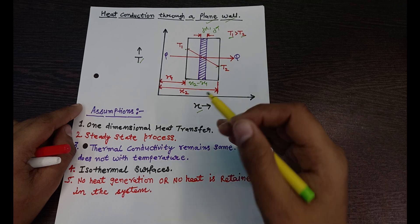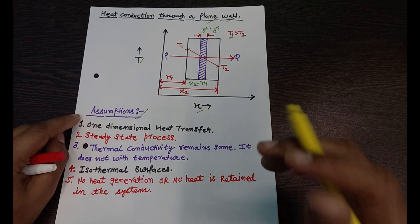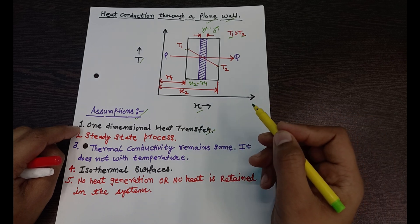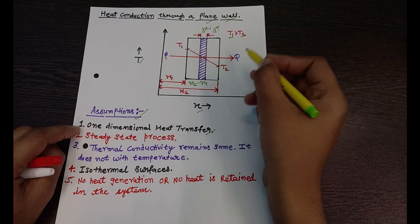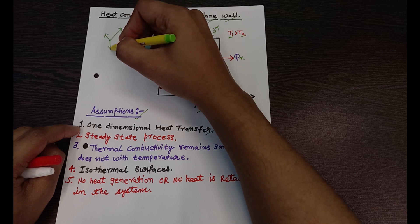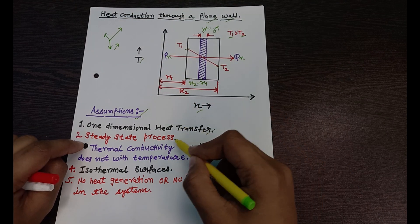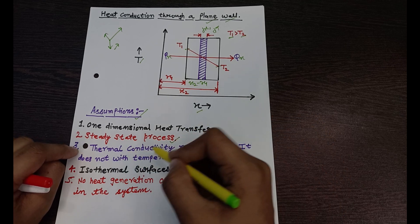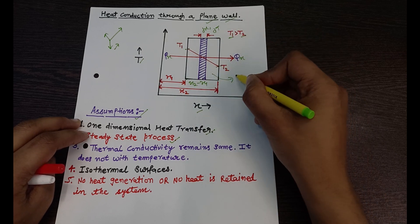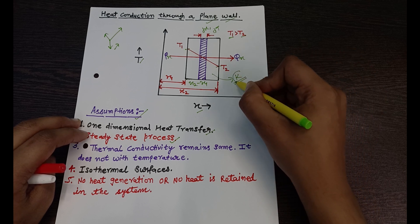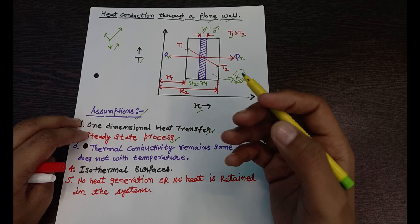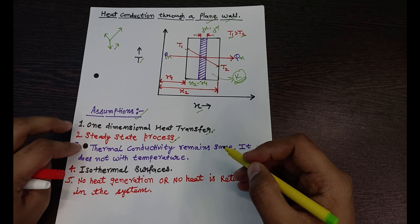Before deriving the equation, we need to establish our assumptions. I am taking five assumptions. The first is one-dimensional heat transfer, meaning heat only transfers in the x-direction — we call it qx — not in two or three dimensions. The second is steady state, meaning variables do not change with time. The third is that thermal conductivity k remains constant and does not vary with temperature. This k is the thermal conductivity of the plane wall, which is a property of the material describing its capacity to conduct heat.